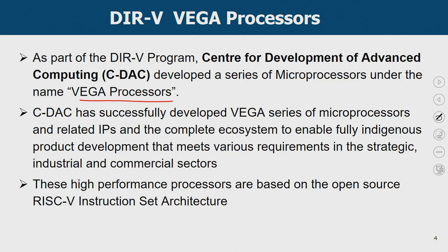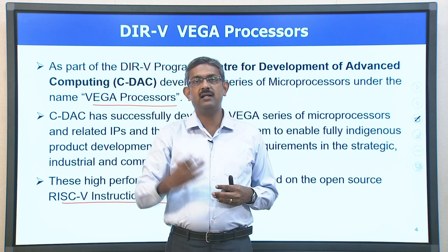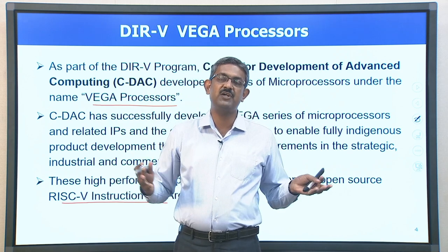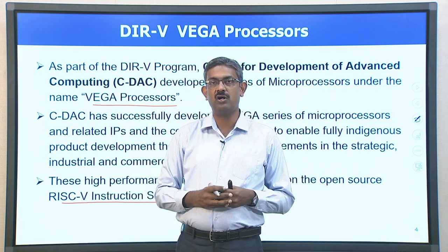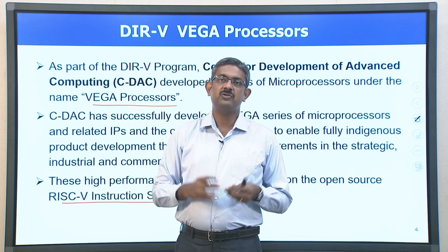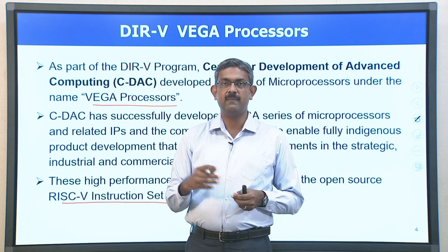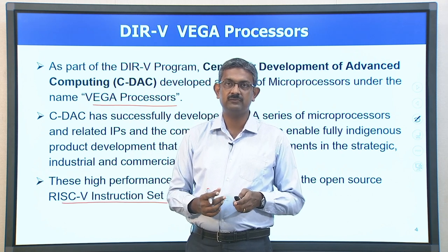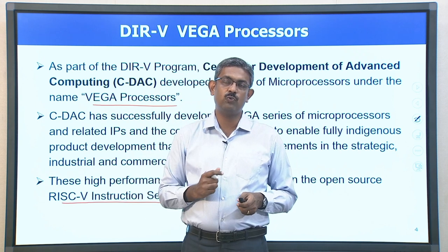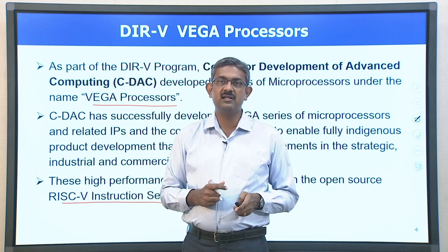These high-performance processors are based upon the open-source RISC-V instruction set architecture. In our course, we have already learned about the RISC pipeline — the basic 5-stage pipeline — and an extension of that is called the RISC-V ISA. That is going to be the heart of the Vega microprocessors. Before moving into the features of Vega, let me quickly introduce what RISC-V architecture is.